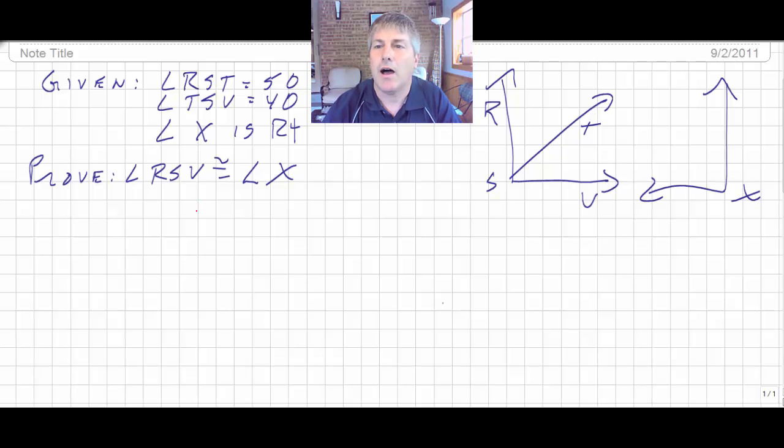So here's an example of what you might see in a homework problem. We'll copy this out of the textbook. We're given that angle RST is 50 degrees. So you may want to go over here and mark that angle as 50. And angle TSV is 40. And so we'll go ahead and mark that as 40 degrees. And angle X is a right angle. So I'm going to encourage you to get in the habit of marking your diagrams. That's very important. Make your life a little bit easier in the long run.